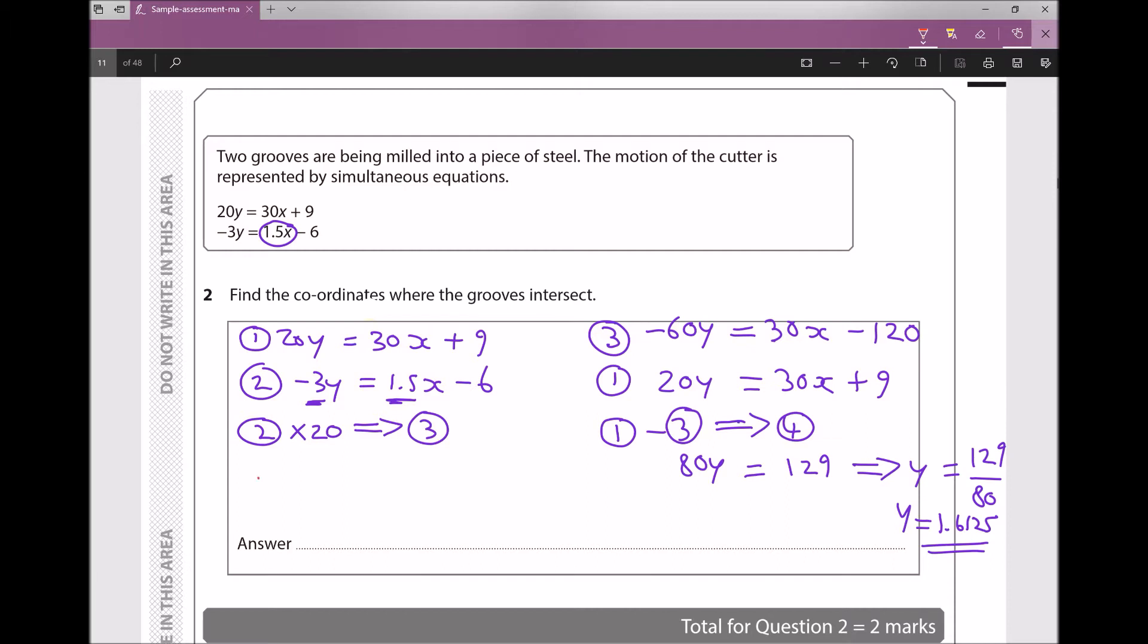So from equation one, I know that 20y—20, and I'm going to input my value for y, 1.6125—so 20y = 30x + 9. If we simplify that, we'll get on the left hand side 32.25 = 30x + 9.